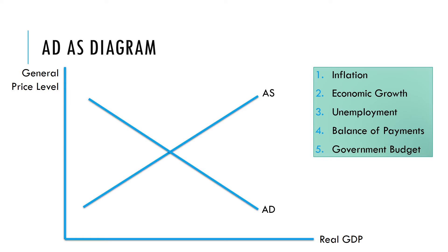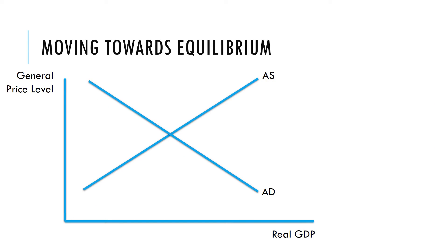We can look at what impact the government might have on the economy — if government increases spending, what impact might that have on aggregate demand, and if they increase something that benefits businesses, what impact that might have on aggregate supply. It's a really useful model for analysing the economy. Let's have a look at some examples.